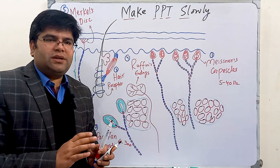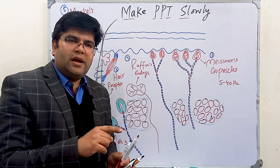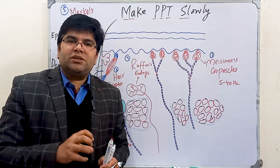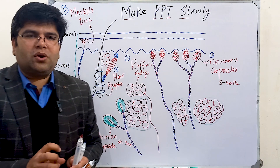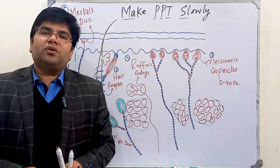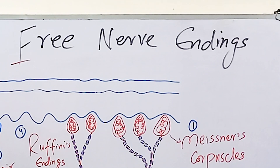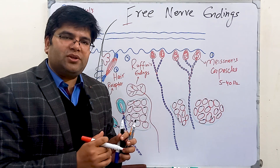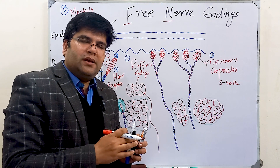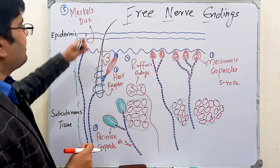Free nerve endings are also present in our skin. They do not have encapsulation at their ends. Free nerve endings are important to detect sensations of crude touch and crude pressure. They also detect tickle, itch, pain, and thermal sensations. The mnemonic to remember features of free nerve endings is: 'FNE' — 'F' is for fire, meaning they detect temperature sensations especially heat; 'N' is for nociception, so they detect pain; and 'E' is for epidermis, as they are located in the epidermis just like Merkel's discs.